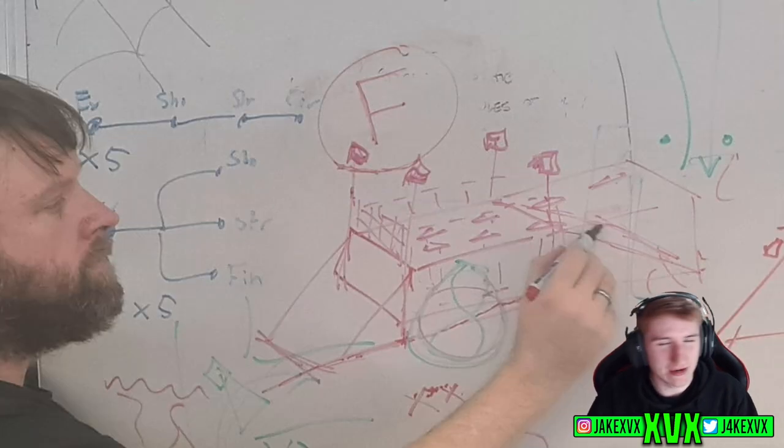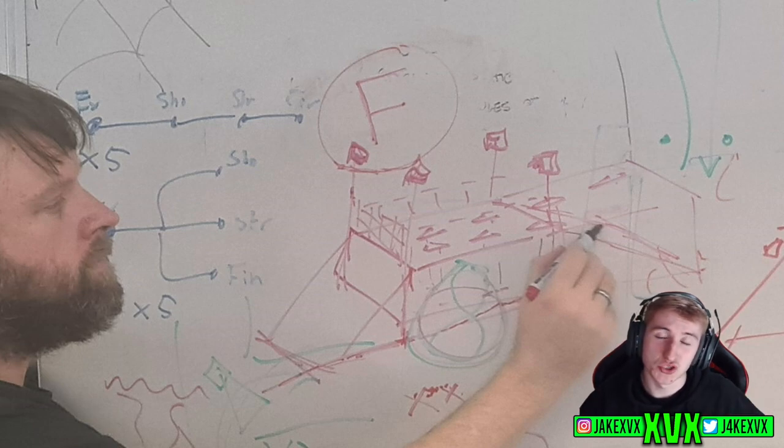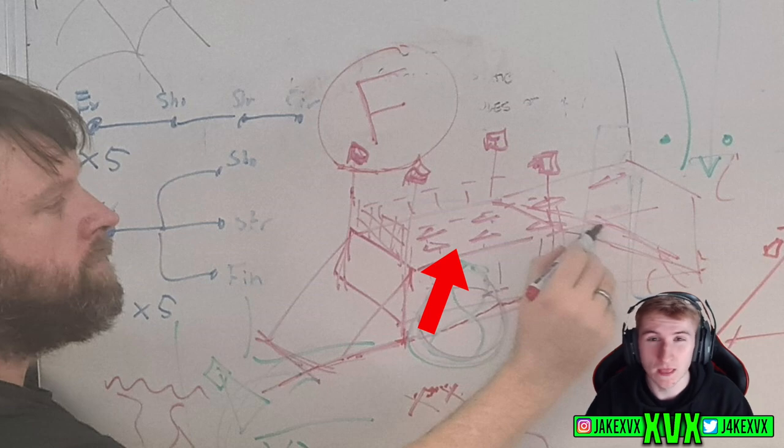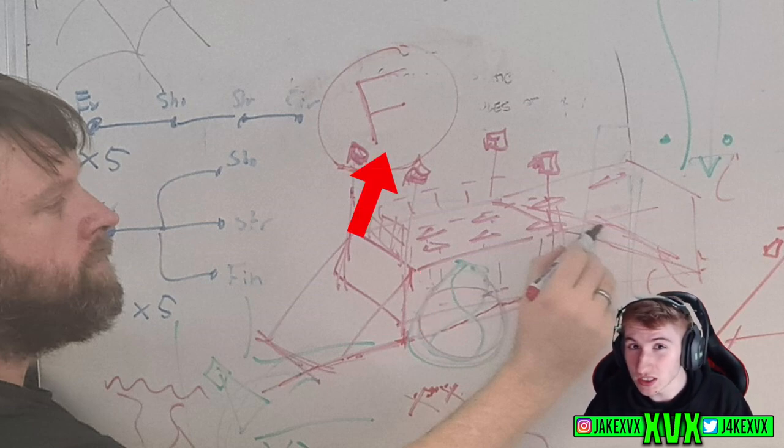Up here we have some kind of contraption. It looks like it might be two ramps up to a platform and there's a pole on each corner of the platform. Could these be checkpoints? Event Lab related maybe? Don't know exactly what the F means though.